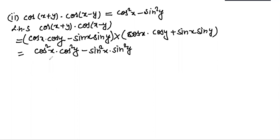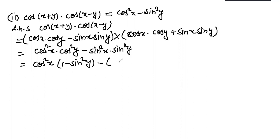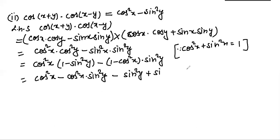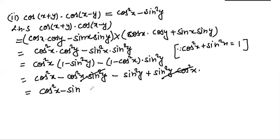We write cos²x cos²y as cos²x(1 − sin²y), and sin²x sin²y as (1 − cos²x) sin²y, using the identity cos²x + sin²x = 1. Expanding and simplifying: cos²x − cos²x sin²y − sin²y + sin²y cos²x, the middle terms cancel, giving cos²x − sin²y. These are the two identities to remember.